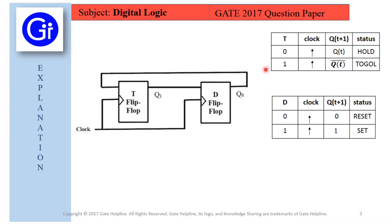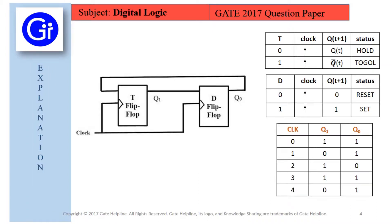Now, knowing the truth tables of both flip-flops, we will evaluate the states of Q1 and Q0 as the clock is applied. We start with the present state at clock cycle 0: Q1=1 and Q0=1. We provide input 1 to the D flip-flop from Q1, and input 1 to the T flip-flop from Q0.